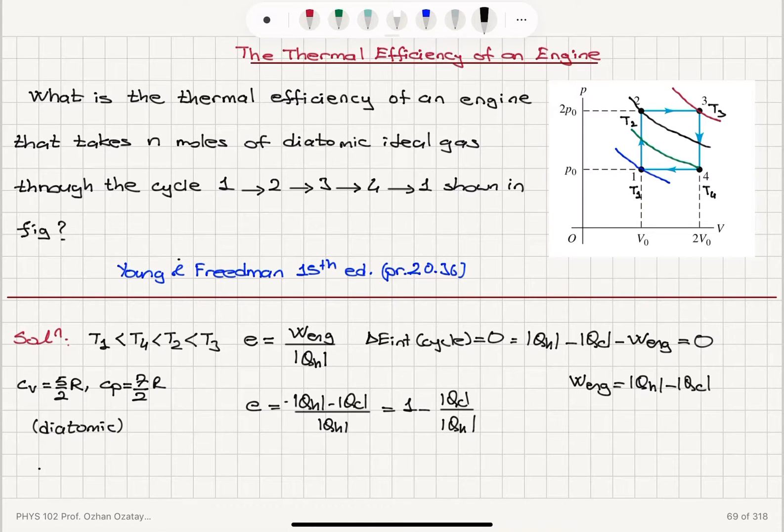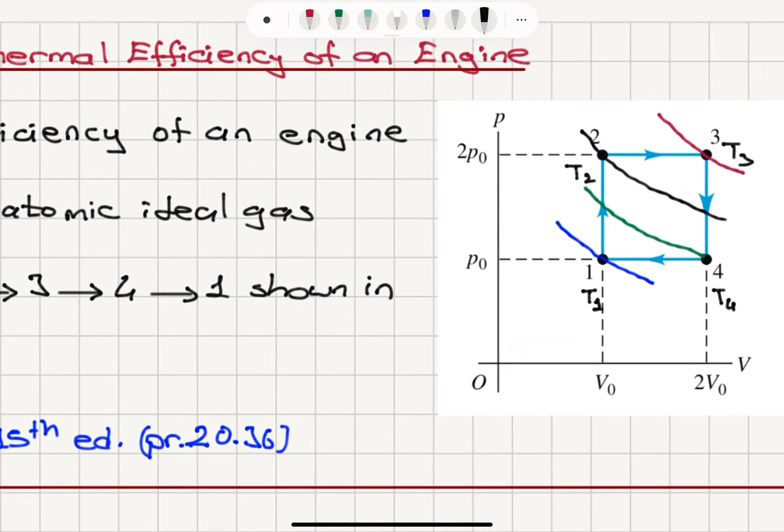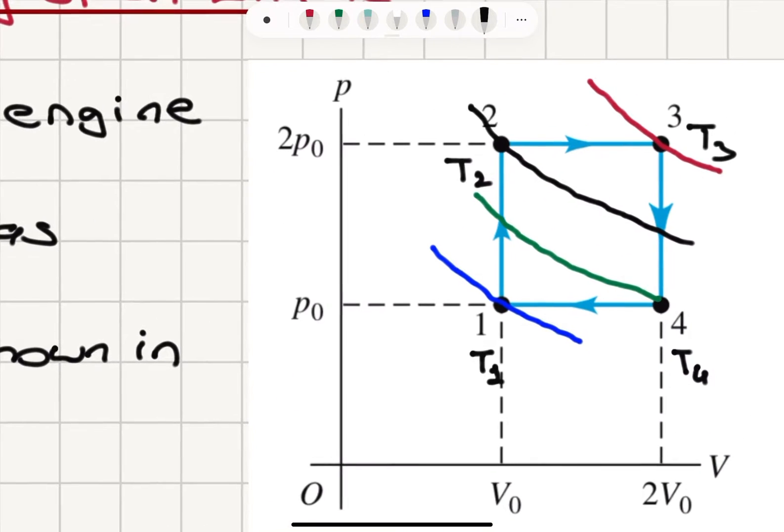Where is the heat being absorbed? Looking at different segments of this cycle, I can see that going from 1 to 2, temperature is increasing. That means heat is being absorbed. Going from 2 to 3, temperature is increasing. That means heat is being absorbed.